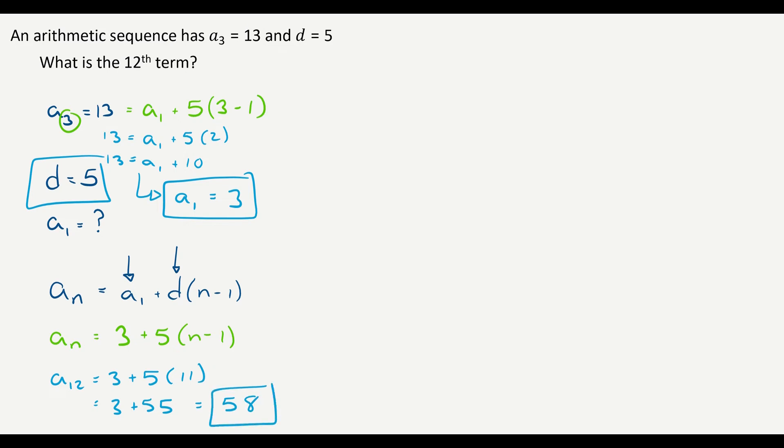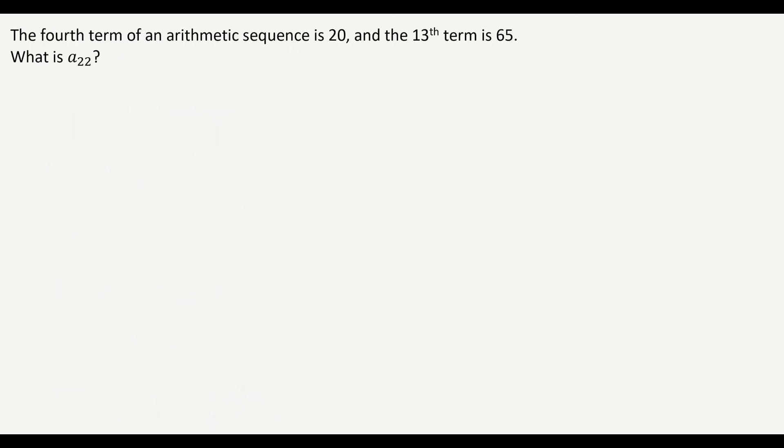Let's take it up one more level. All right, this is the harder version. The fourth term of an arithmetic sequence is 20, so a sub four equals 20. The 13th term is 65, a sub 13 equals 65. What is a sub 22? So for our process, we are going to find the rule. The rule a sub n equals a sub one plus d times n minus one. Again, we have to figure out what the common difference and the first term are. I don't know either, but a similar process as that previous example.